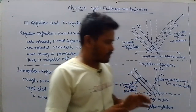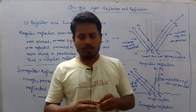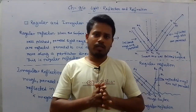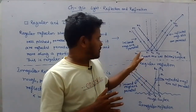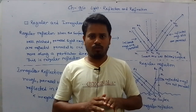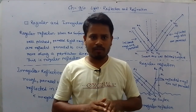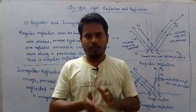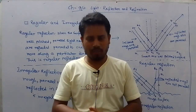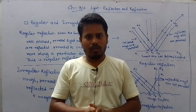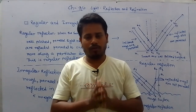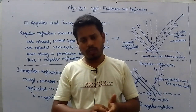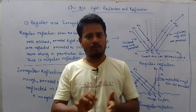Now, the smooth and well-polished surface on which regular reflection takes place is known as a mirror. In general, a smooth and well-polished surface can be called a mirror.